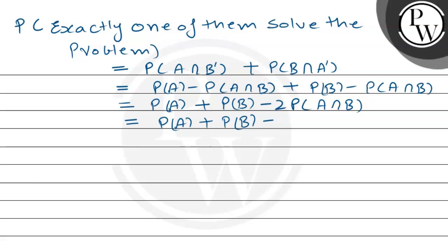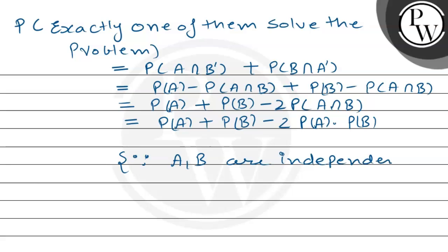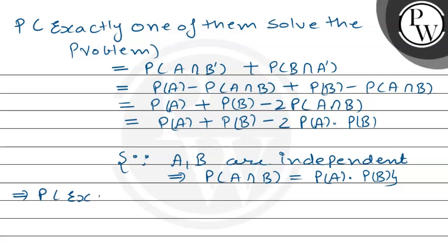Since A and B independently solve the problem, we call A and B independent events. Therefore, probability of A intersection B equals probability of A multiplied by probability of B. This implies the probability that exactly one of them solves the problem equals P(A) + P(B) minus 2 times P(A) times P(B).